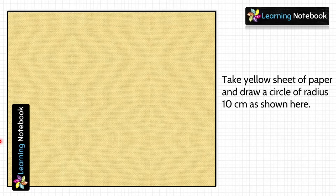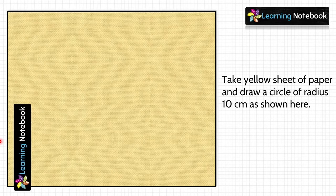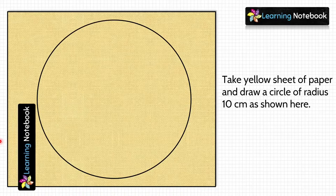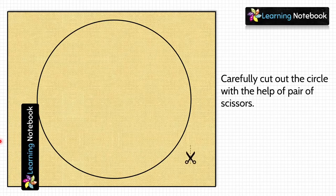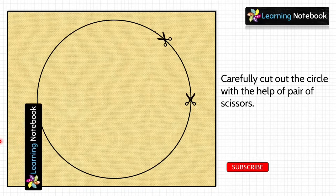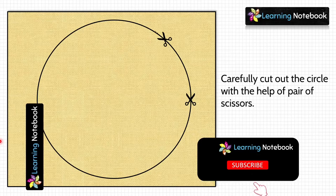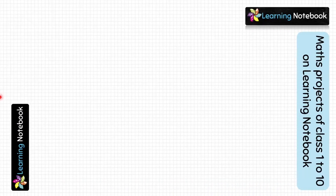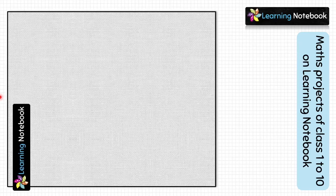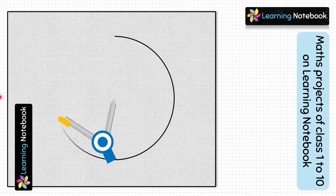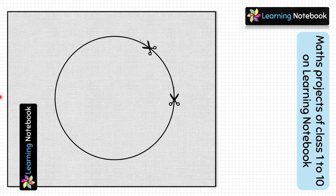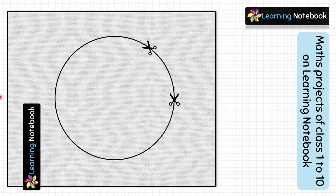Next, take a yellow sheet of paper and draw a circle of radius 10 centimeters, then cut it out using a pair of scissors. Lastly, take a white sheet of paper and draw and cut out a circle of radius 5 centimeters.